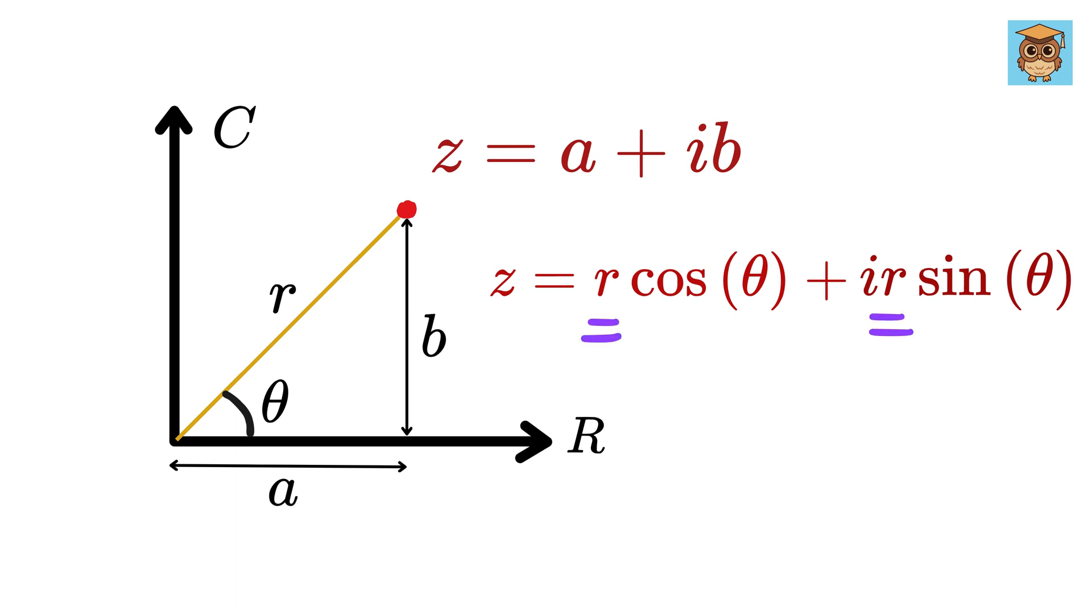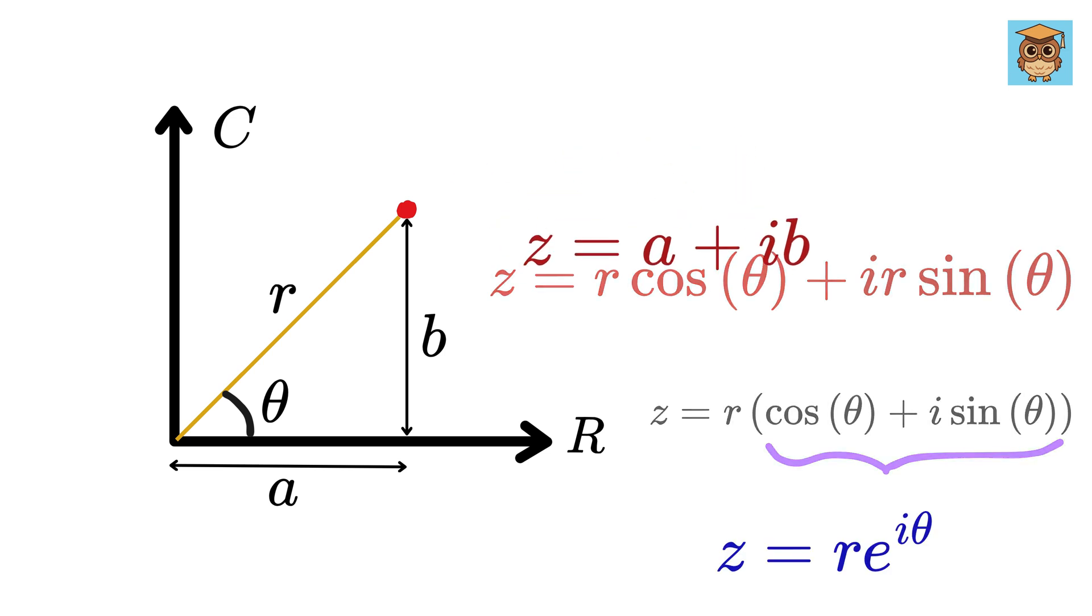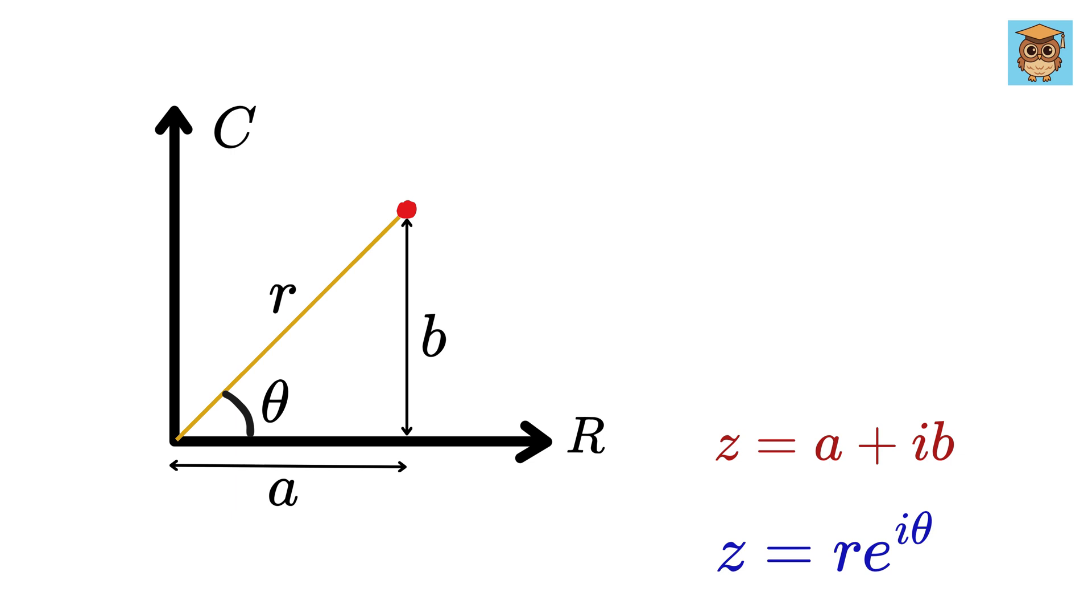Now take r as common here, and we get z as r times cos theta plus i sine theta. Now, can you see the connection? This is none other than Euler's formula, or e to the i theta. What is the benefit of representing z this way?